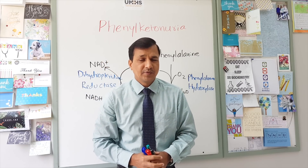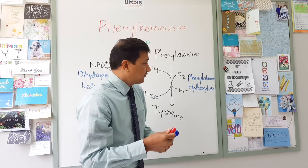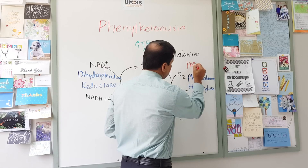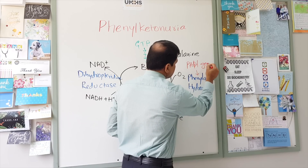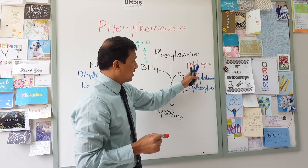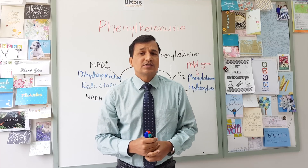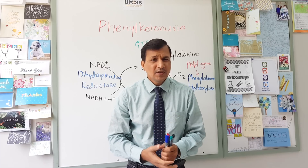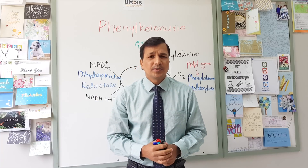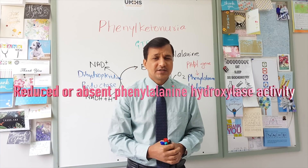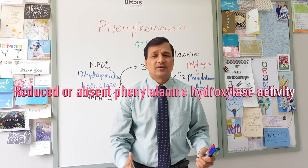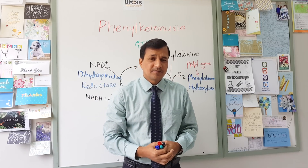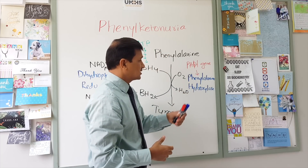Classical phenylketonuria is caused by a mutation in the PAH gene, which codes for phenylalanine hydroxylase enzyme. This mutation leads to significantly reduced or absent phenylalanine hydroxylase activity. In classical PKU patients, less than 1% of normal phenylalanine hydroxylase activity is present, meaning 99% is lost, causing significant accumulation of phenylalanine in the tissues.